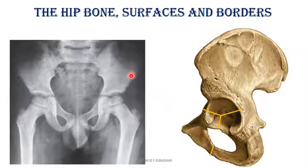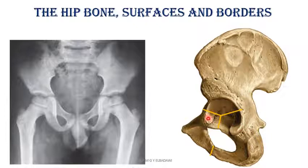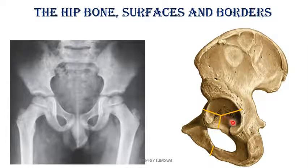What you can see here is the X-ray on the right side for a child, and on the left side is the adult hip bone. The hip bone is formed of three parts: the ilium, the pubis, and the ischium. These three parts meet to form the acetabular fossa. The share is one-fifth for the pubis, two-fifths to the ilium, and two-fifths for the ischium.